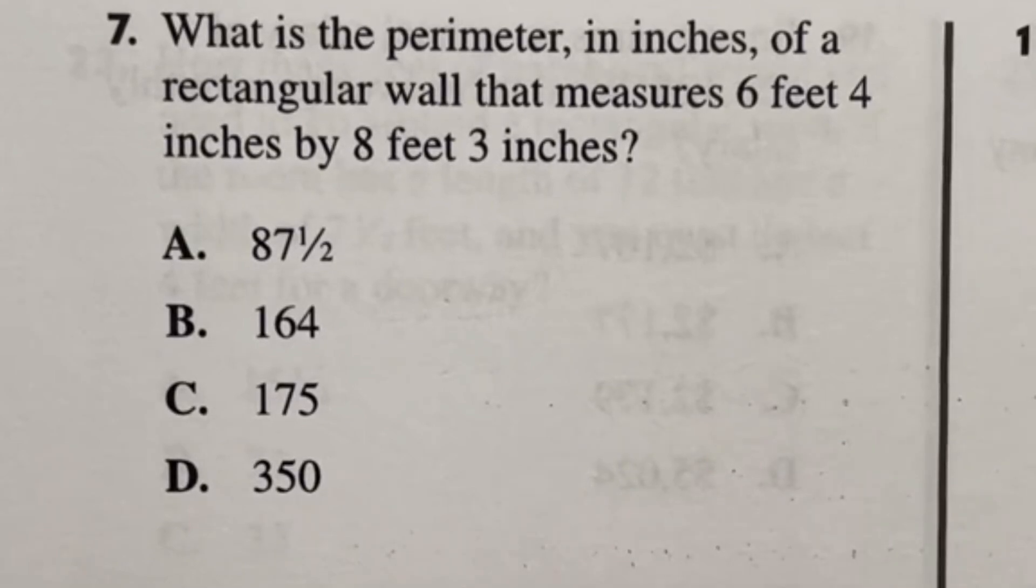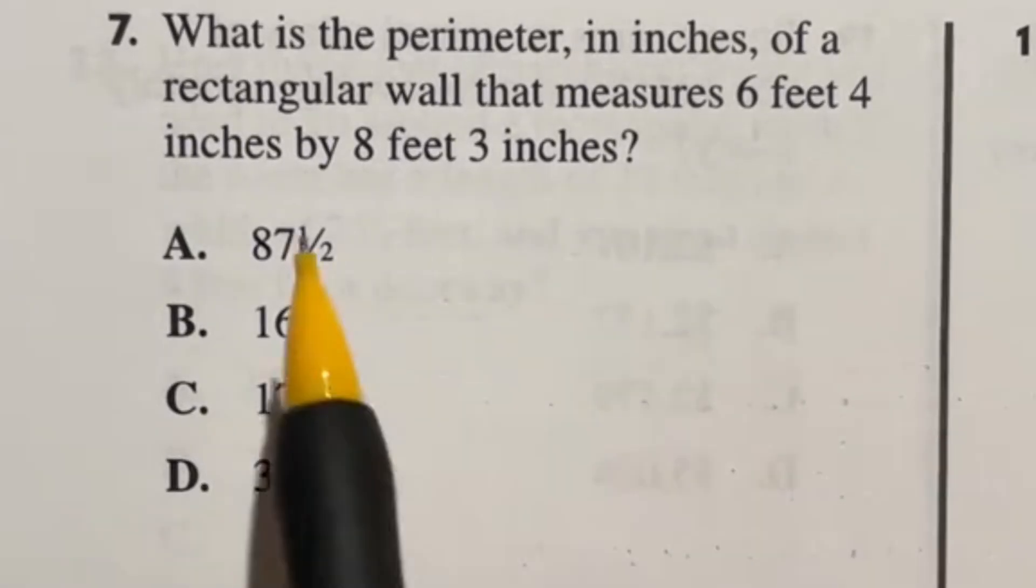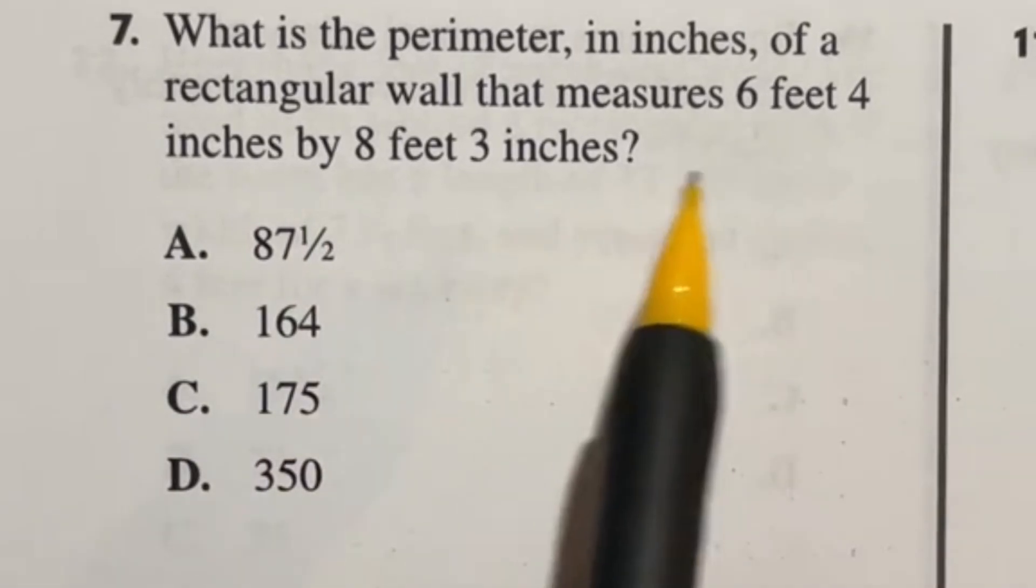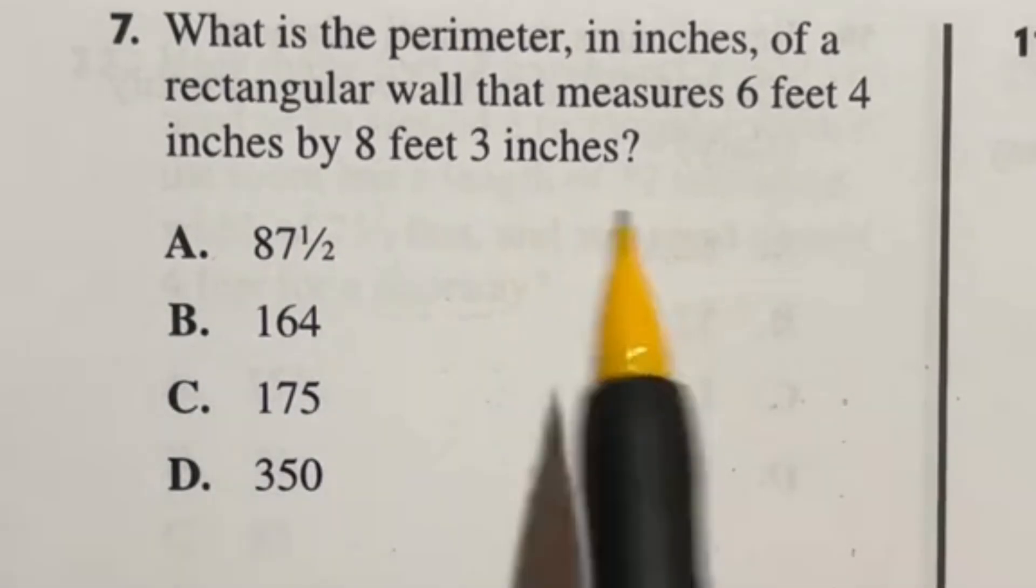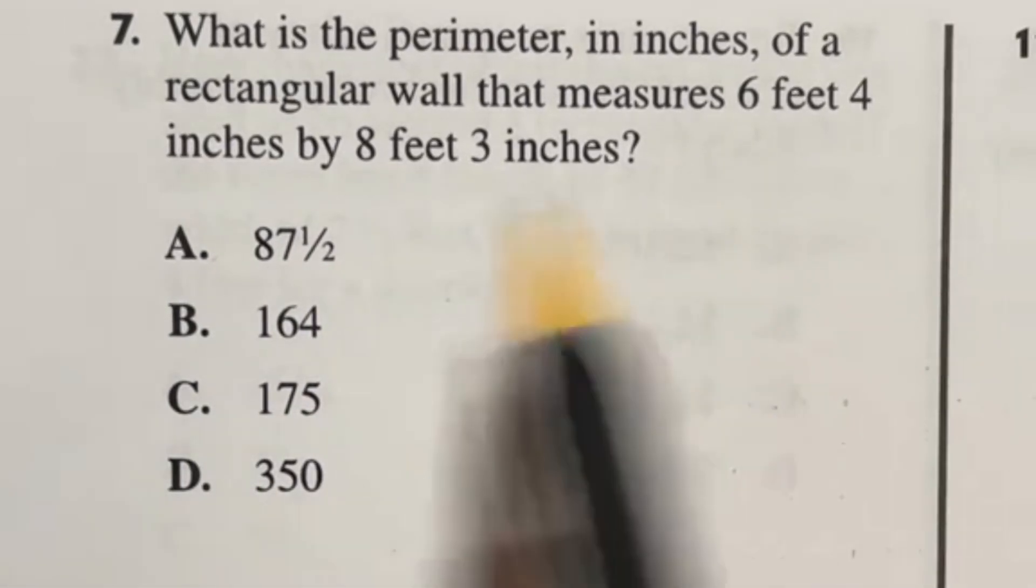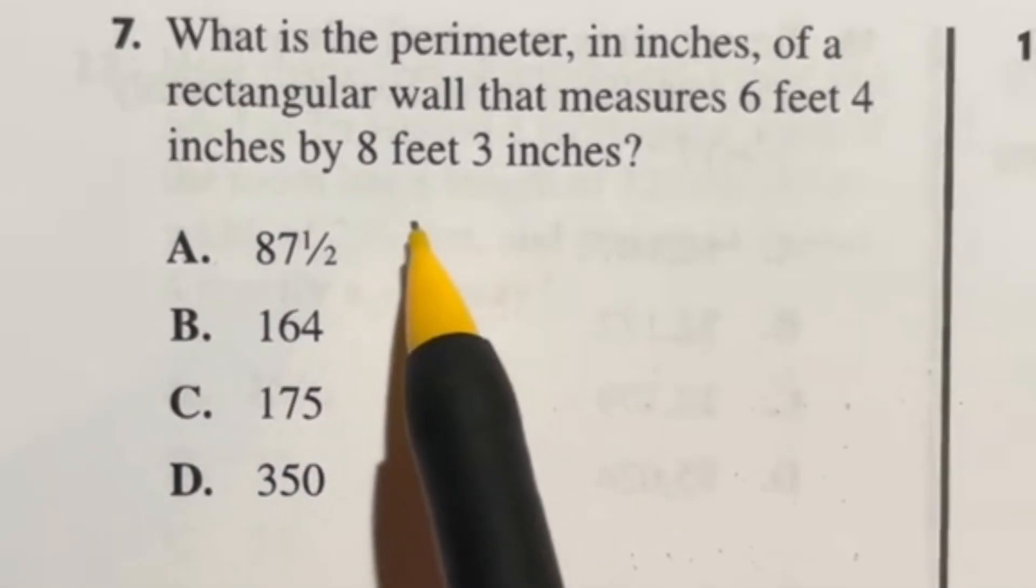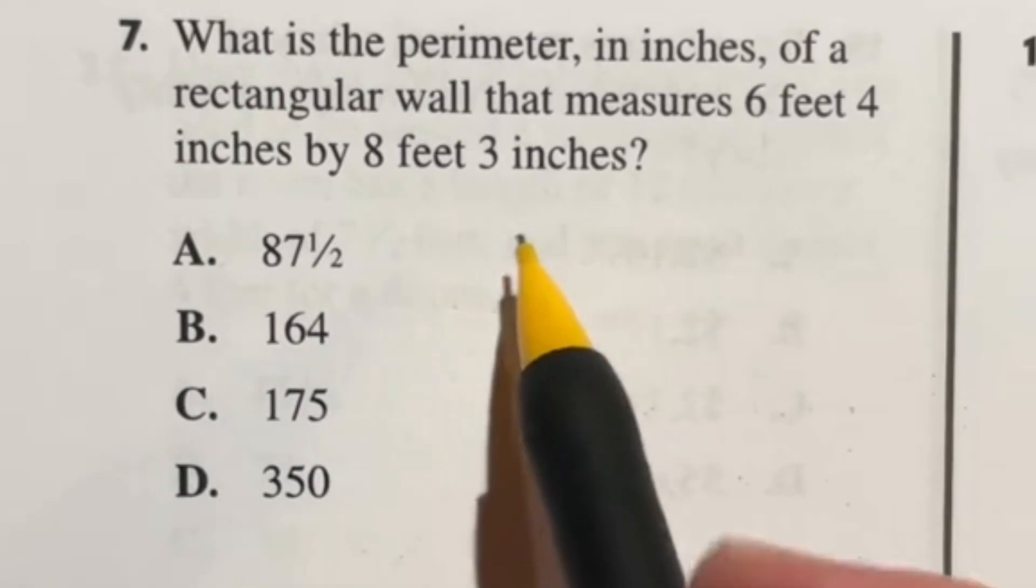Number seven says, what is the perimeter in inches of a rectangular wall that measures six feet four inches by eight feet three inches? The first thing to remember here is you have to do all the things. It's very easy to forget some of the steps here and get the wrong answer because of it.